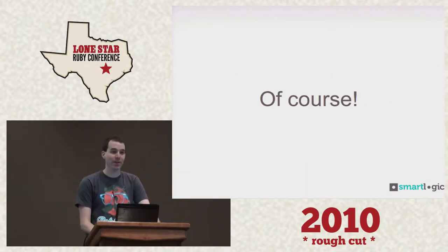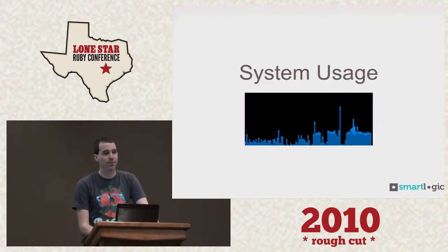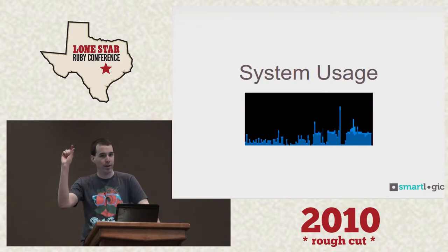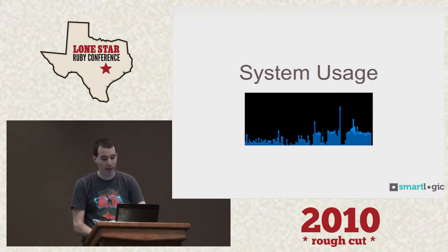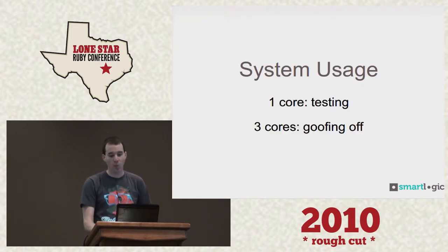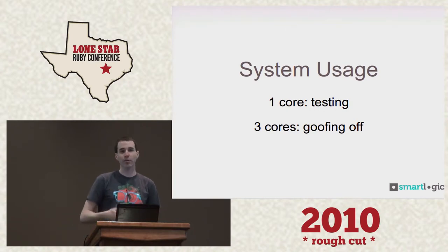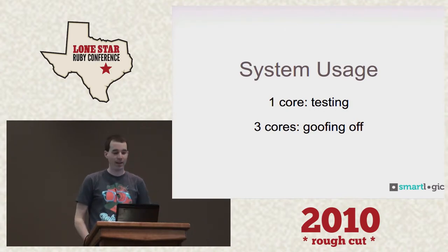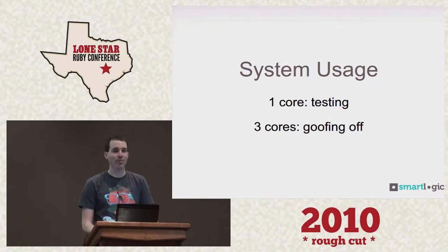I looked at my system usage graph in Ubuntu — this is my CPU usage during a test suite run. I told you I had a quad-core machine, and it's really not being utilized. One core is doing all of my testing, and three cores are for me to goof off while my test suite runs. I could probably switch this around, give the tests a little bit more processing power. So let's talk about multi-core testing.